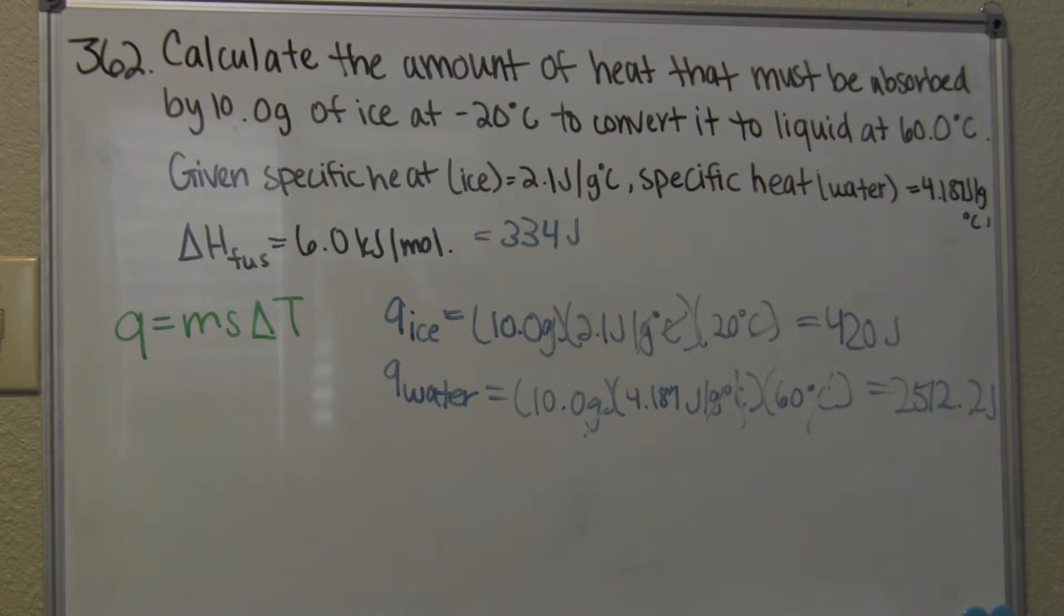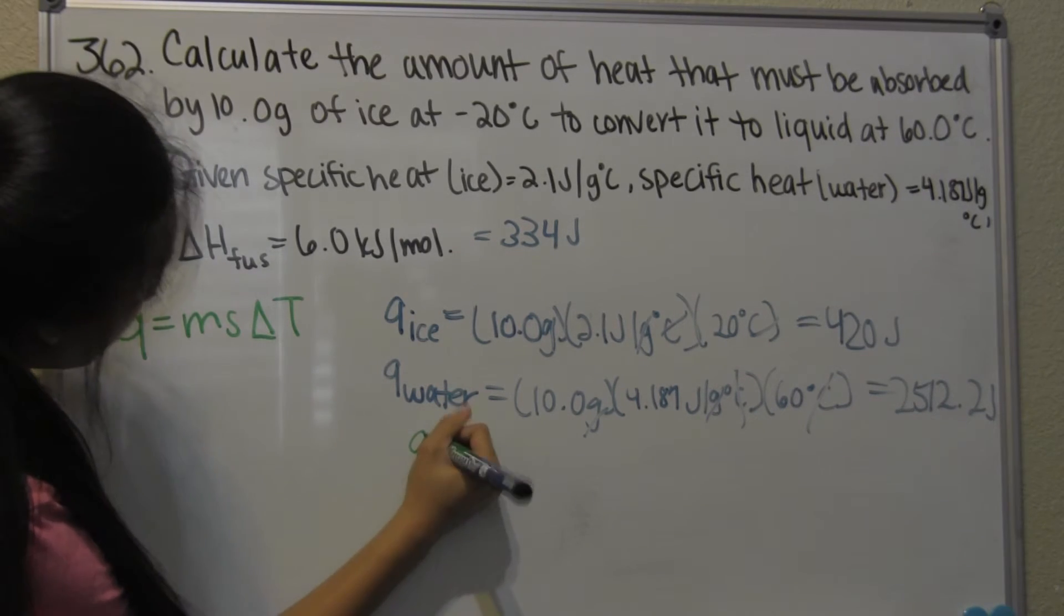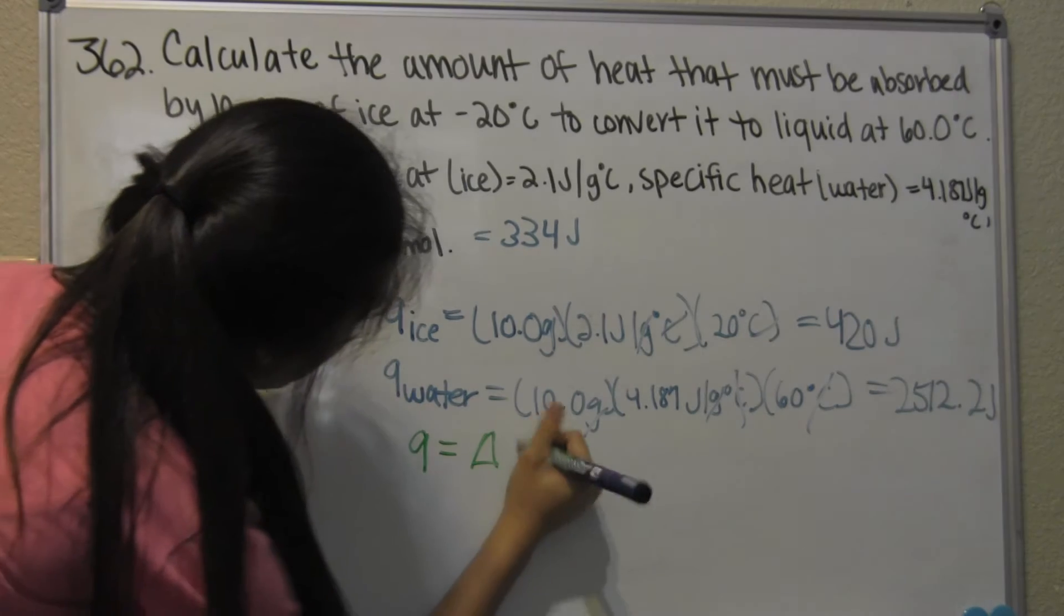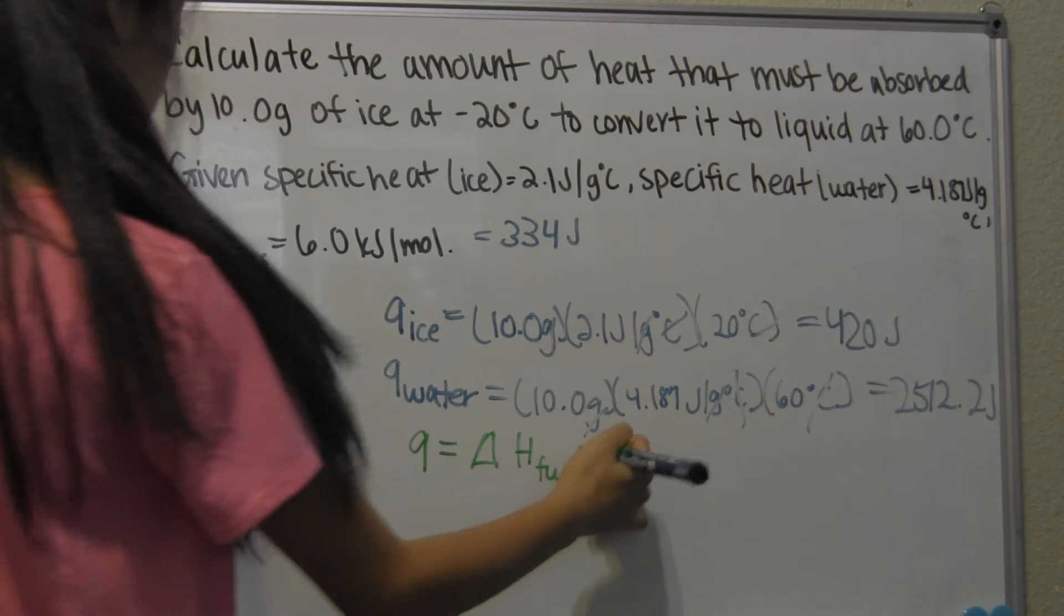We're going to use that, and this time we don't add the temperature. What we do is, Q is equal to the delta H of fusion, times the mass.